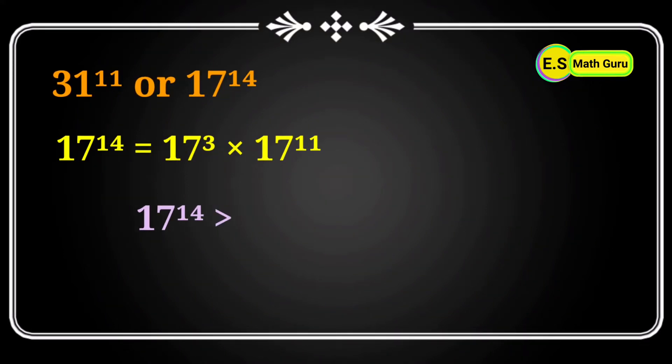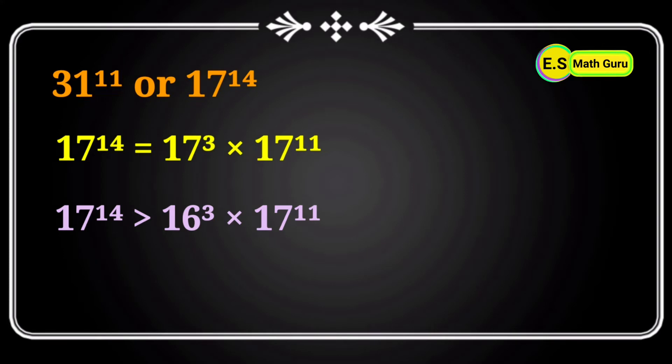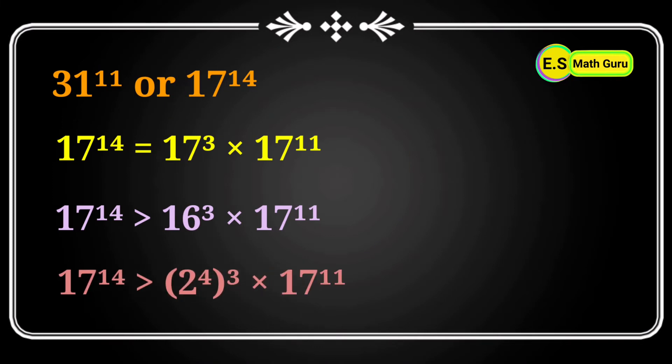17^14 is greater than 16^3 × 17^11 because 17^3 is greater than 16^3. Now let us write 16^3 as (2^4)^3 because 16 is equal to 2^4.